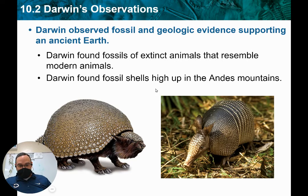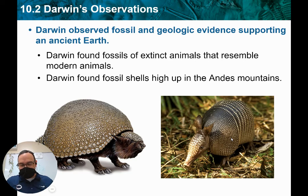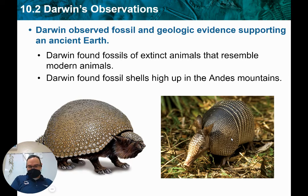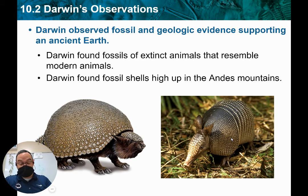Darwin also found fossils of extinct organisms that looked like living organisms. Like he'd find something and say, wait a minute, that looks a lot like this thing that still exists. So he'd find fossils of something no longer there and think, this looks just like something that still exists right now. He thought that was very strange, and asked what it was about one organism that it didn't make it, and what it was about another that it did.